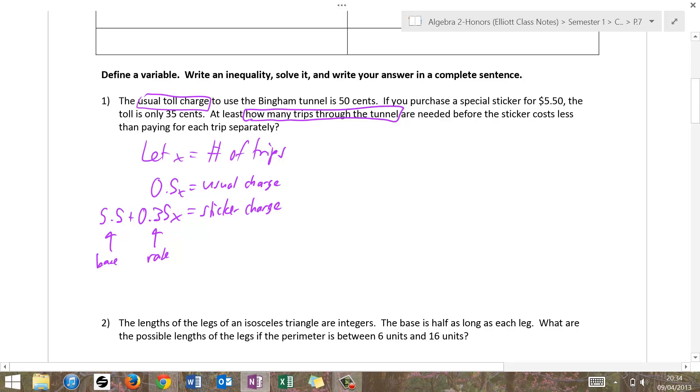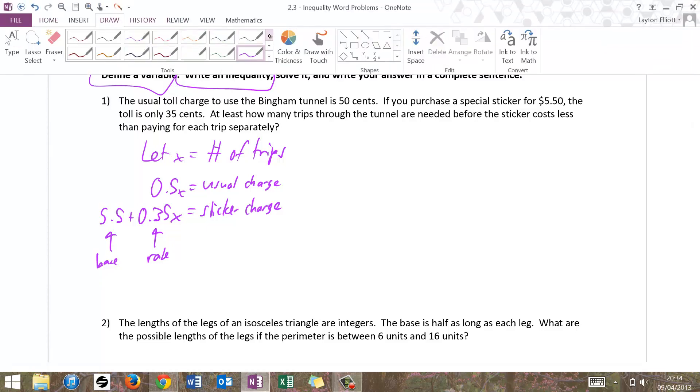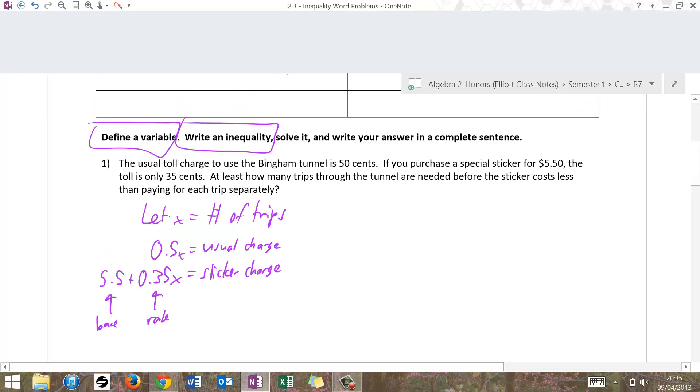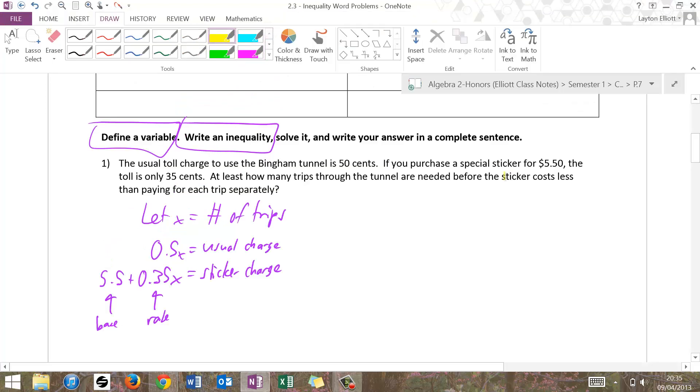So we have the sticker charge, we have the usual charge. Now that we got that, it says we kind of set up our inequality to find a variable, write an inequality. We're at step two here. At least how many trips through the tunnel are needed before, and here we go with the translation. Translation says the sticker costs less than paying for each trip separately. The sticker price, the sticker amount, so here's the sticker one, is less than paying for each trip separately, which I would call the usual charge.